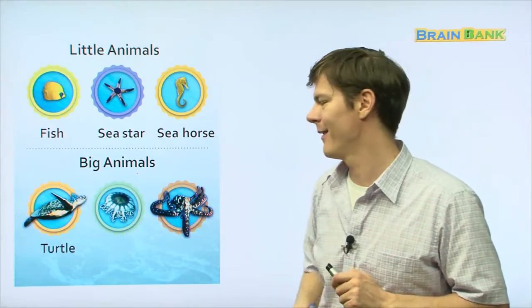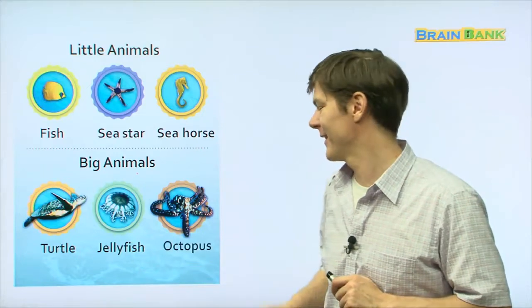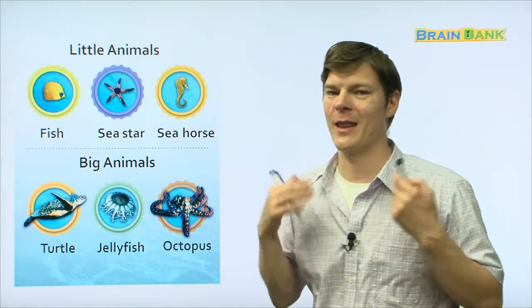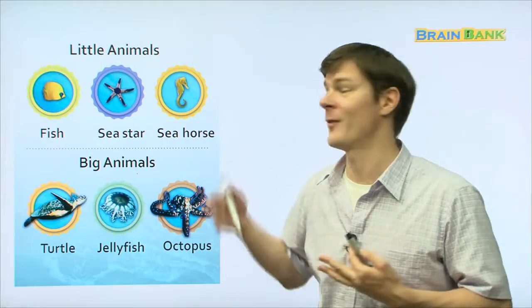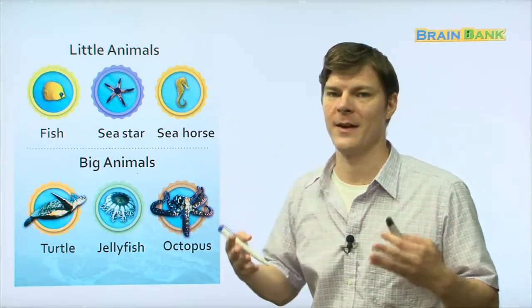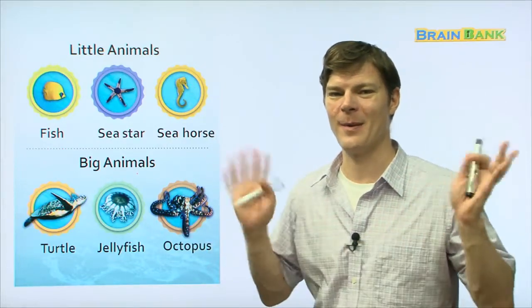Muno. Turtle. Jellyfish. Octopus. All right. So, I hope you've learned a lot about the different types of little animals and big animals that live in the big blue sea. Thank you, and see you later. Bye-bye.